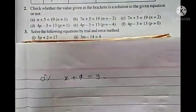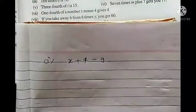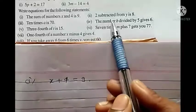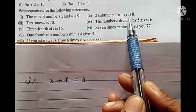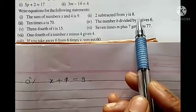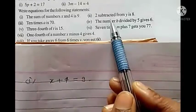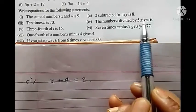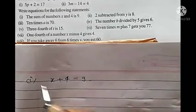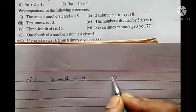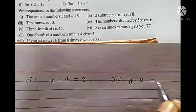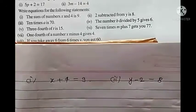You just have to form the equation from what is written. Second: 'subtract 2 from y is 8' — they are saying subtract 2 from y, meaning y minus 2, and we get 8. So the equation is: y minus 2 equals to 8.